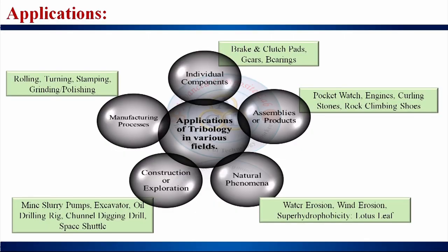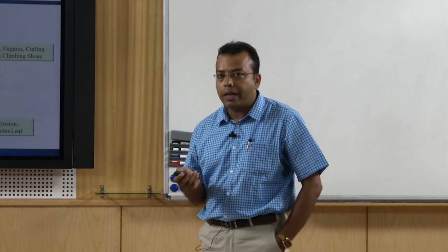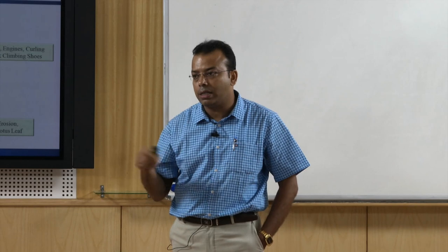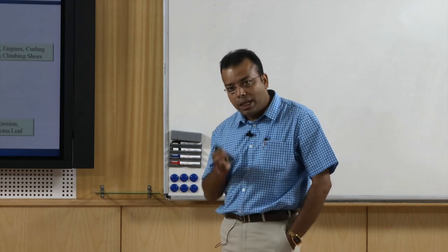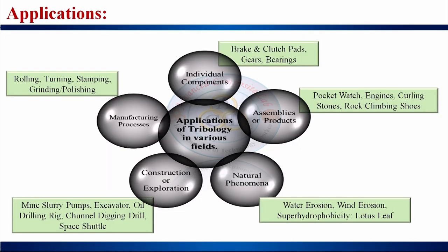Natural phenomena involving tribology include water erosion, wind erosion, superhydrophobicity, and the lotus leaf — when water droplets land on a lotus leaf, friction is created. Even rain dropping on vehicles or bodies creates some friction, though very small or negligible. Construction and exploration examples include mine slurry pumps, excavators, oil drilling rigs, and space shuttles.